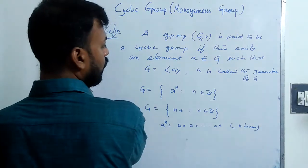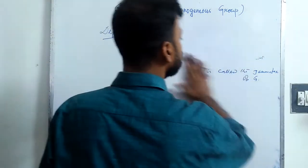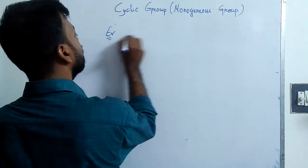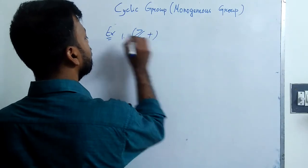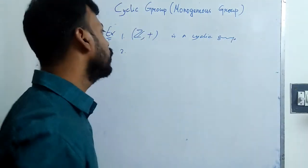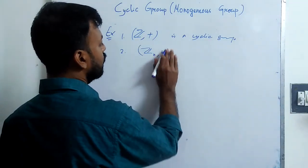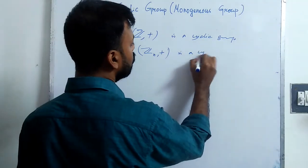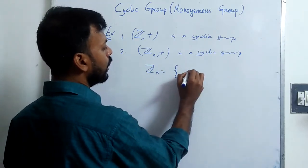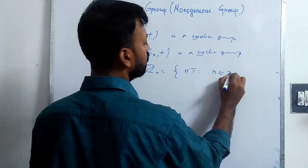Now I will give examples. First, Z+ is a cyclic group. Second, Zn+ is a group and this is also a cyclic group, because Zn is generated by the class 1.